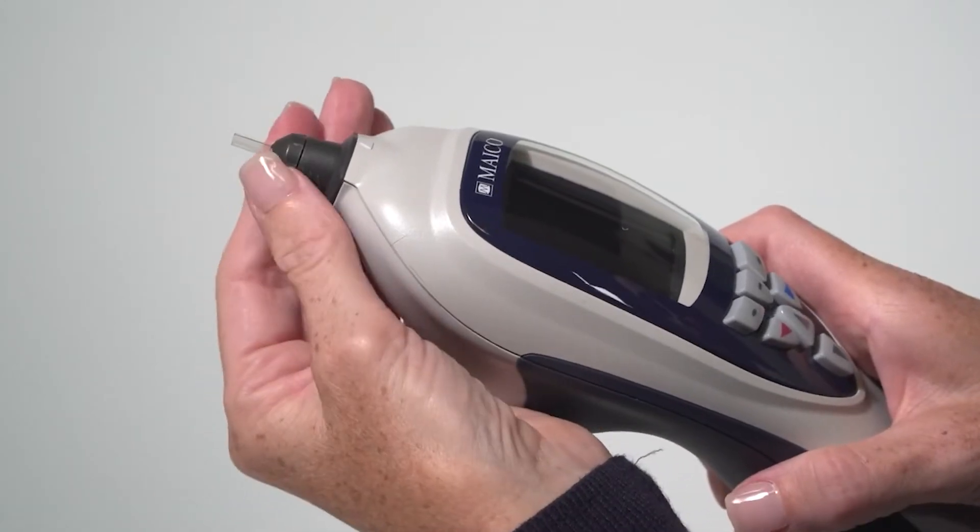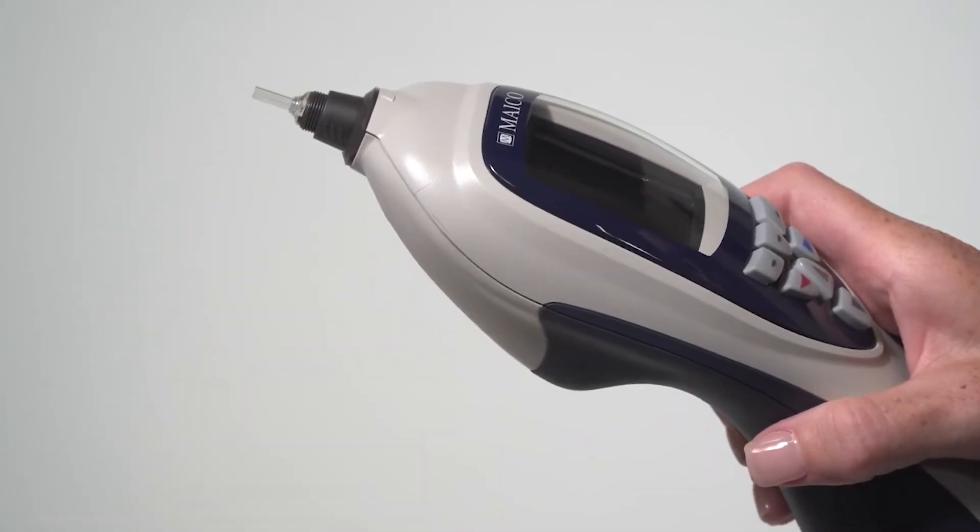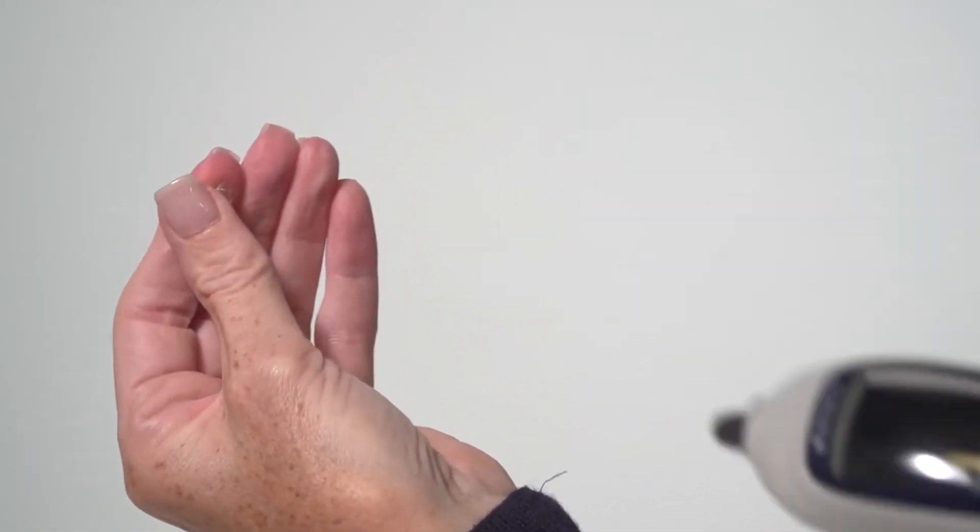To clean the probe tube, start by turning the probe cap in a counterclockwise direction. Never clean the probe tube while still attached to the probe. Take the plastic probe tube out of the probe.